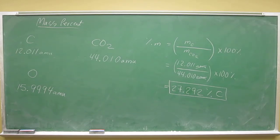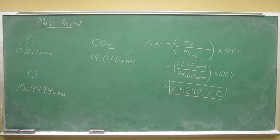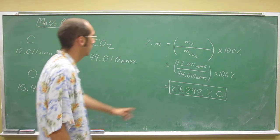Okay, so we just figured out the percentage of carbon in carbon dioxide. Now let's figure out the percentage of oxygen. Well, we can do this two ways. We can do the easy way because we know the percentage of carbon.